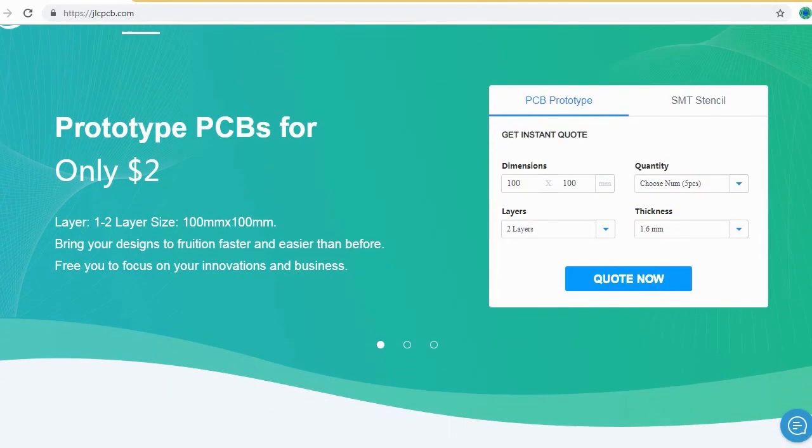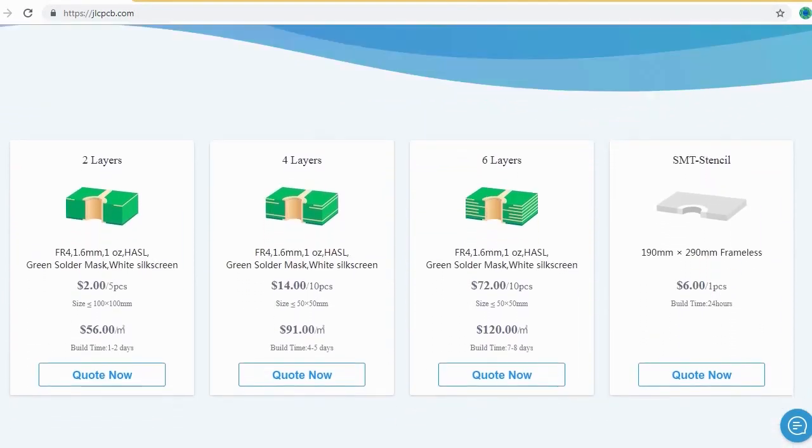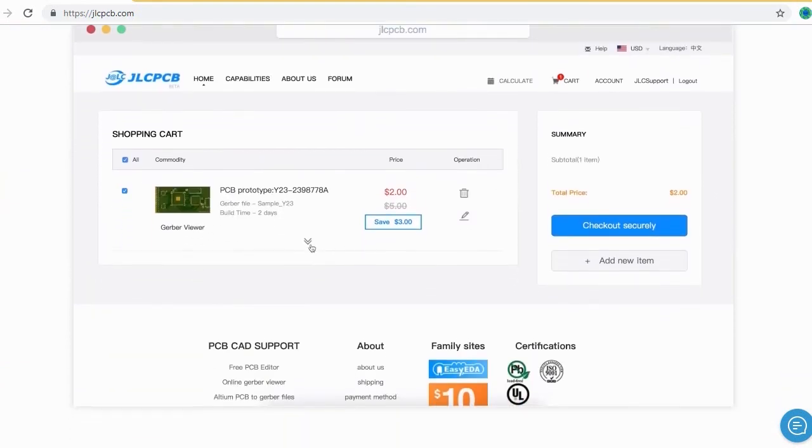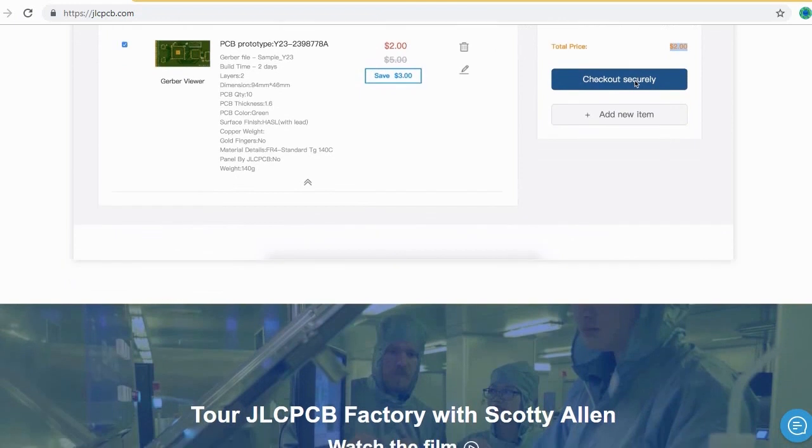JLCPCB is the largest PCB prototype enterprise in China and a high-tech manufacturer specializing in quick PCB prototype and small batch PCB production.